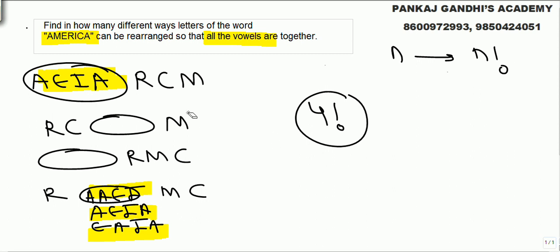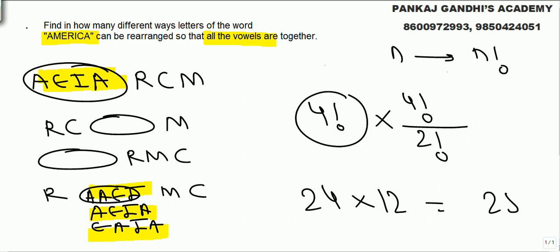But in each of these cases, inside, 4 vowels at 4 places - these inside arrangements, 4 things at 4 places can be arranged in 4 factorial. But for 2 A's we need to divide it by 2 factorial. So what we get here is 24 into 12.